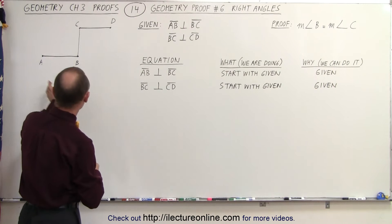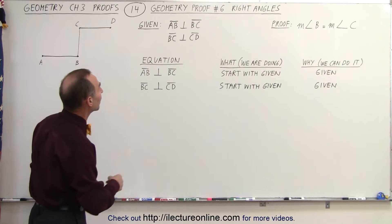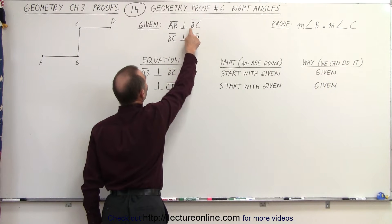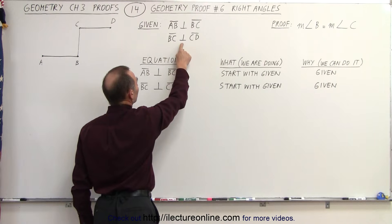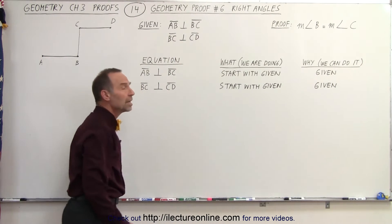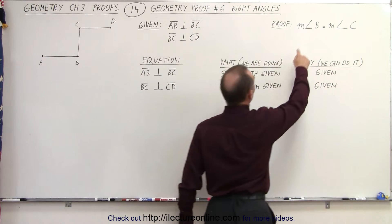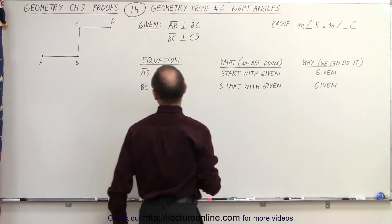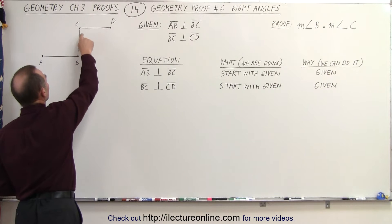What we're given here is three line segments. We're given that line segment AB is perpendicular to line segment BC, and line segment BC is perpendicular to line segment CD. We're trying to prove that the measure of angle B equals the measure of angle C. Angle B is right here, and angle C is right here.